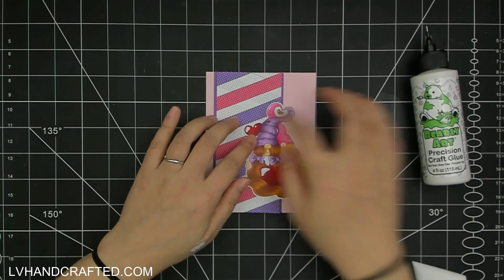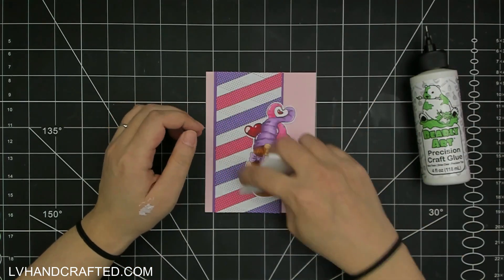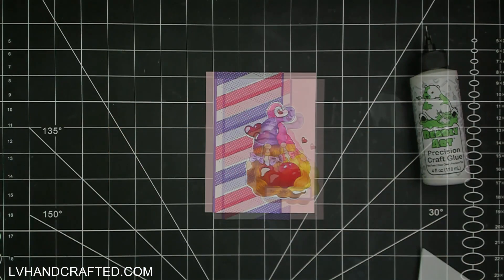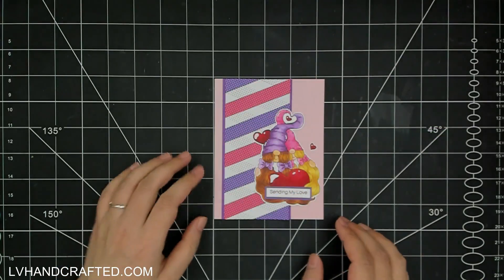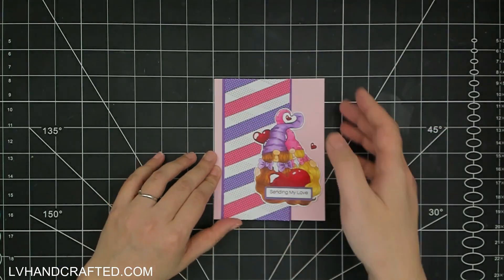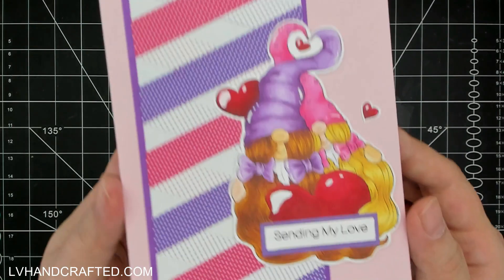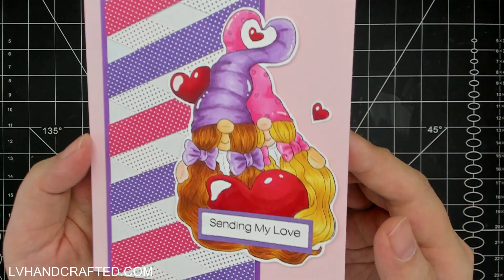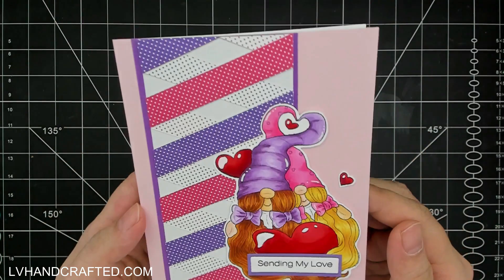And then I can just apply glue on that left half. So the last thing I did was I stamped out a sentiment, backed it with some solid color cardstock, and glued that right on top of my image. And that's my final card.